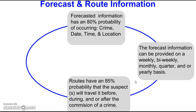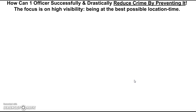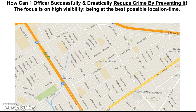The routes I provide have an 85 percent probability that the suspects are going to be on that route before, during, or after the commission of a crime. The number of suspects will be known to you, and the number of crimes they will commit will also be known to you. The question is: how can one officer or one unit successfully and drastically reduce crime by preventing it?